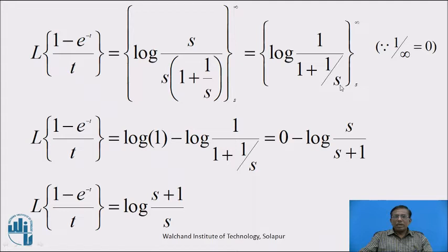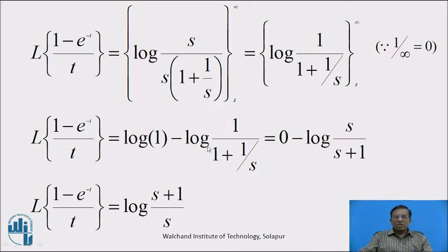This can be written as log[1/(1 + 1/s)] with limit s to infinity. Substituting the limits: when s equals upper limit infinity, using 1/∞ = 0, we get log 1. When s equals the lower limit s, we get log[1/(1 + 1/s)], which simplifies to log[s/(s+1)]. Therefore, the result is log 1 minus log[s/(s+1)], which equals log[(s+1)/s]. This is the required answer.